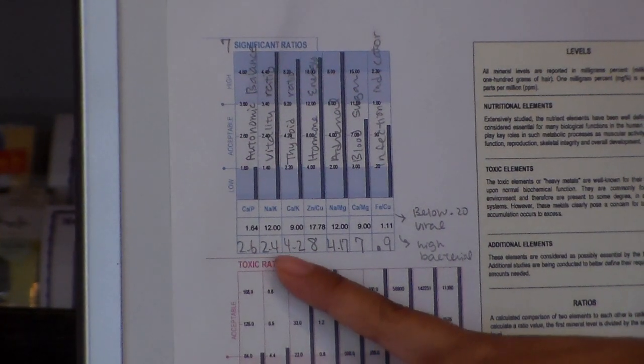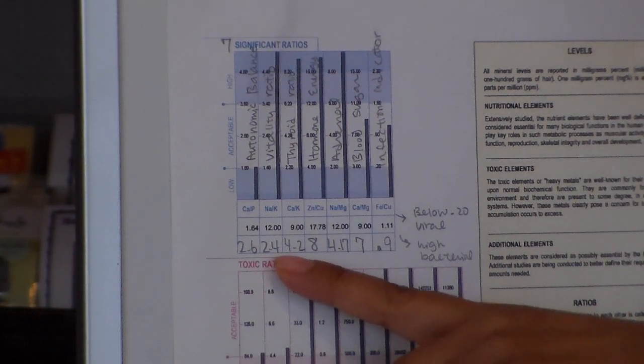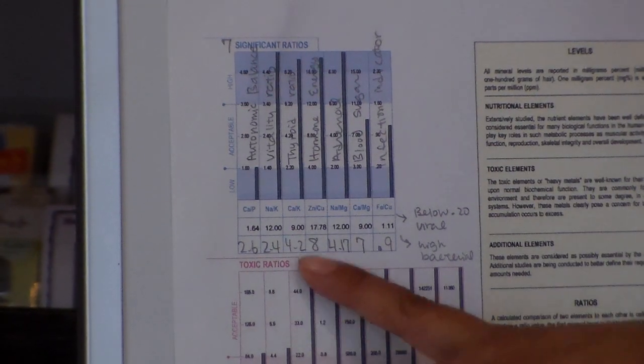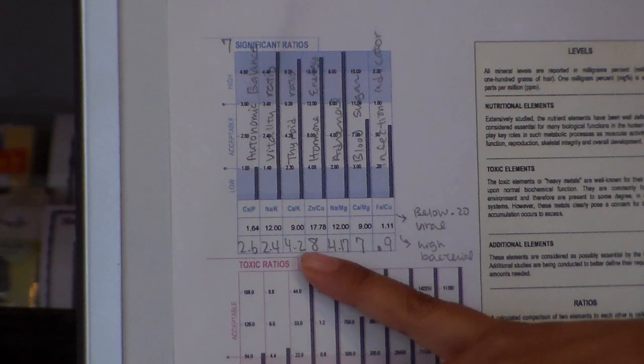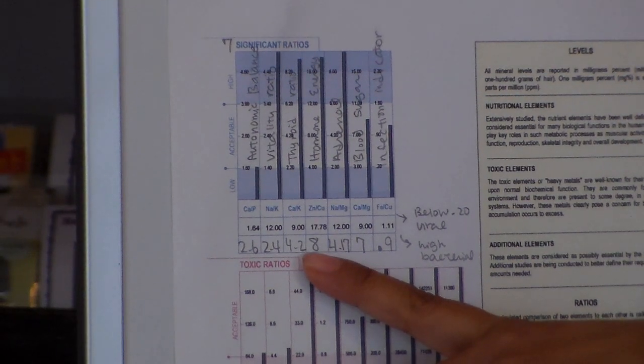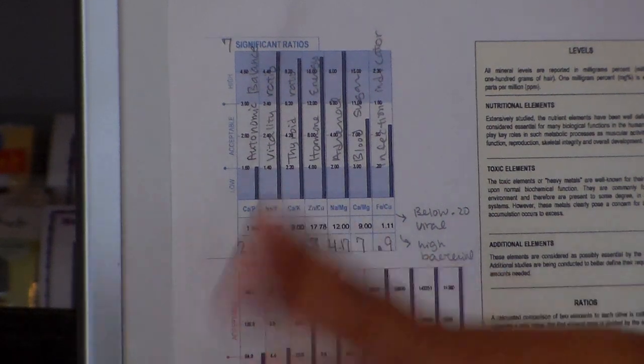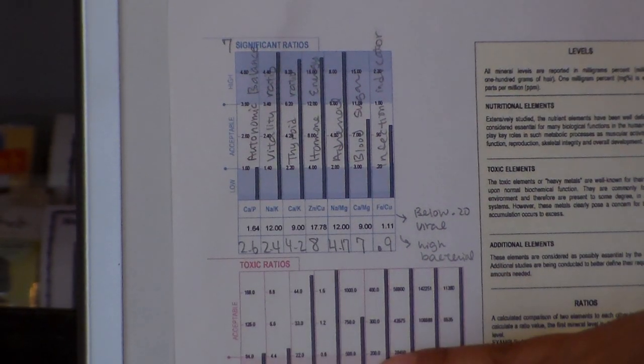You've got the sodium to potassium - this is known as the vitality ratio or the adrenal strength indicator. You've got the calcium to potassium ratio, also known as the thyroid ratio. You've got zinc and copper, and that's to get insight into your hormone and energy.